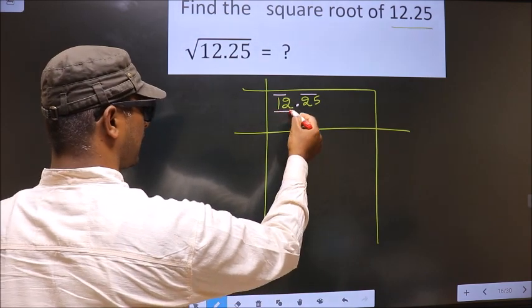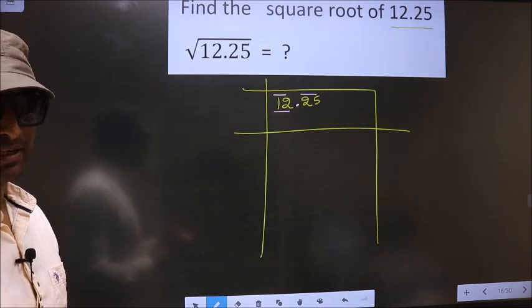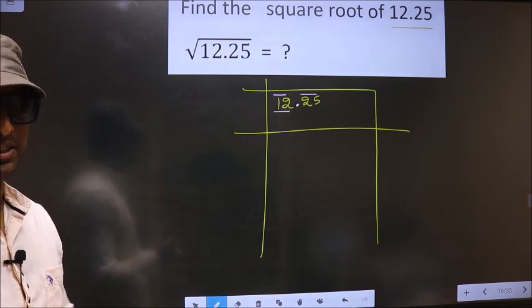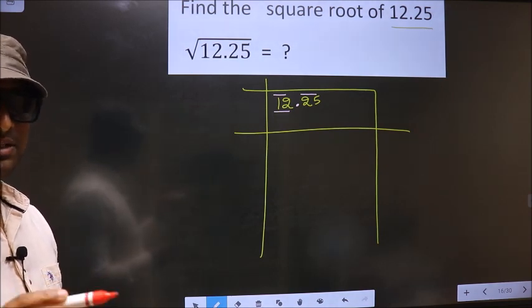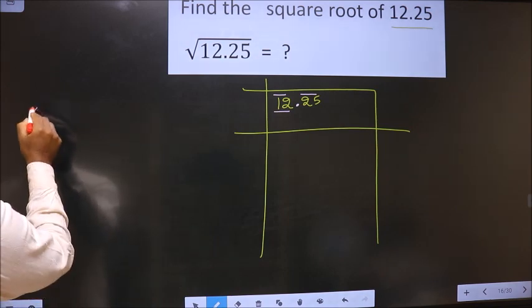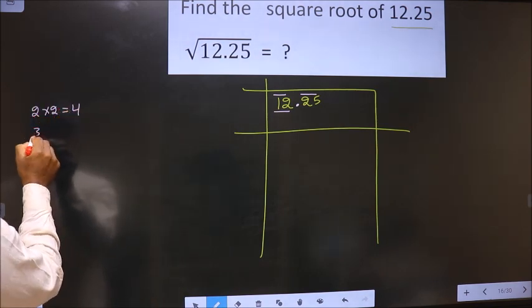Now here we have 12. 12 is not a perfect square. So now we should check 12 lies between which two perfect square numbers. And the perfect square numbers are these. That is 2 into 2, 4.